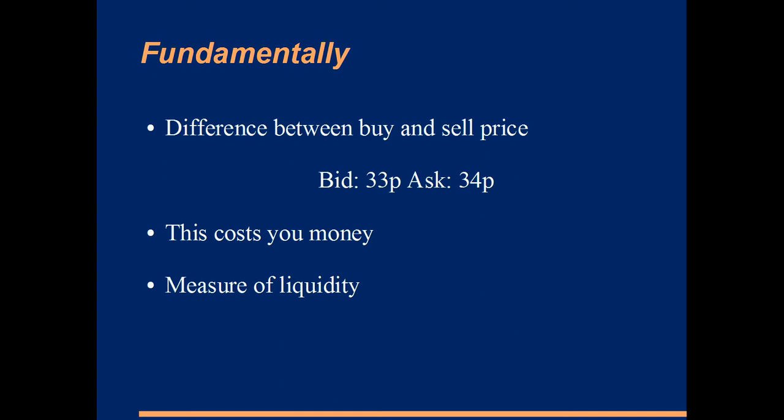And just as a final point, we'll look at the bid-ask spread as a percentage. It's a common way that it's expressed, and is useful for when you're calculating your costs, your returns, portfolio turnover, and all those sorts of things. To find the bid-ask spread as a percentage, you're just taking the ask price, subtracting the bid price, and dividing by the ask price, and multiplying by 100. It's very similar to the formula for a percentage change.